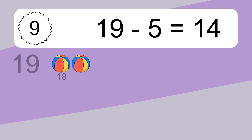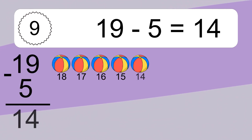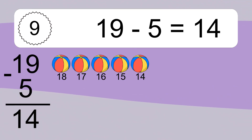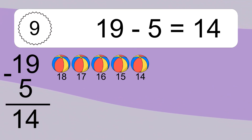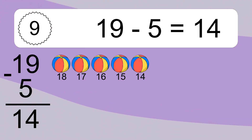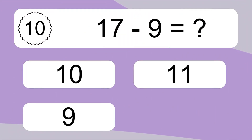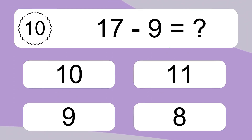19 minus 5 equals what? 19 minus 5 equals 14. Let's count it: 18, 17, 16, 15, 14.